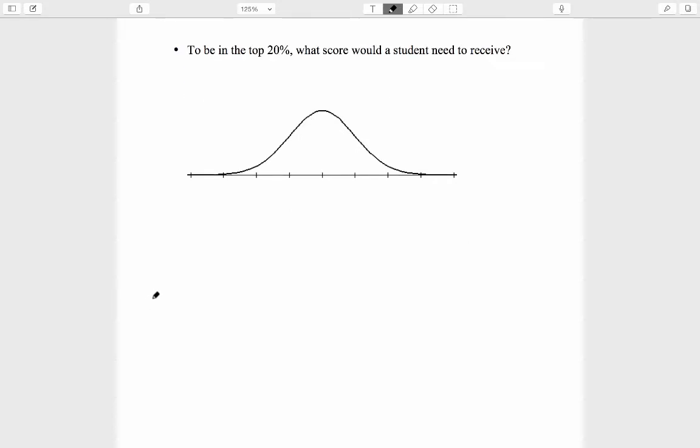Now a new kind of question. To be in the top 20%, what score would a student need to receive? Now that's different because we're not given a z-score, we're not given a raw score, we have to work backwards from the table to a raw score. Now this is a little bit tricky.